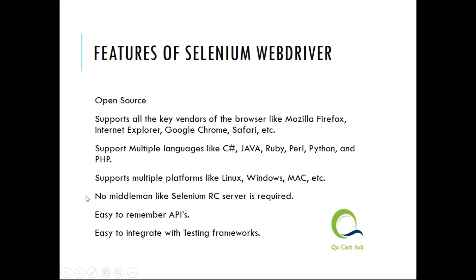No middleman like RC is required. The API is very easy to remember — for example, to type in a text box there is a method called send_keys, and to navigate to a URL there is a method called navigate_to or .get. These easy-to-remember APIs, along with easy integration with testing frameworks like JUnit and TestNG, are some key features of Selenium WebDriver.